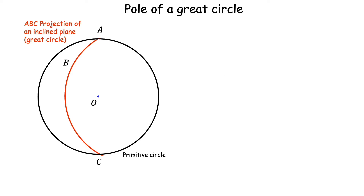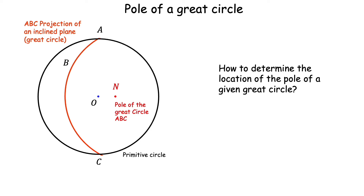Any given plane has a plane normal. The plane projects as a great circle, and the normal of the plane will project as a point in the stereographic projection. Suppose the normal of the plane ABC projects at the point N — then the point N is called the pole of the great circle ABC. In this video we will try to see how to determine the location of the pole of a given great circle.